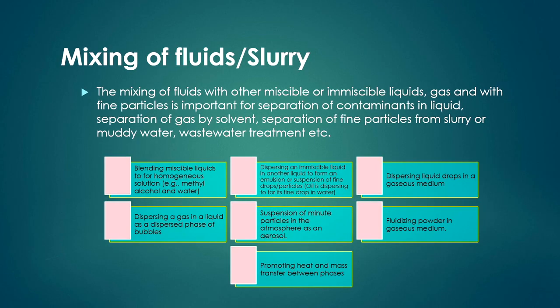Dispersing an immiscible liquid in another liquid to form an emulsion or suspension of fine drops or particles — for example, dispersing oil into fine drops in water — and also suspension of minute particles in the atmosphere as an aerosol are important. Mixing is very important for promoting heat and mass transfer between phases. When dispersing liquid drops in a gaseous medium, liquid drops can absorb gaseous contaminants, and such operations depend on the dispersion phenomena of the liquid.